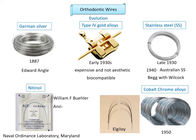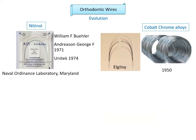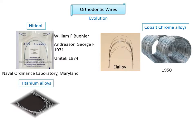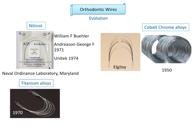Anderson, George, and Buehler introduced Nitinol in orthodontics in 1971 through the University of Iowa. Unitek Company licensed the patent in 1974 under the name Nitinol. In the 1970s, titanium alloys were introduced as orthodontic wire materials. Beta titanium alloys were developed around 1980 by Charles J. Burstone and John Goldberg, and marketed as TMA — Titanium Molybdenum Alloy.